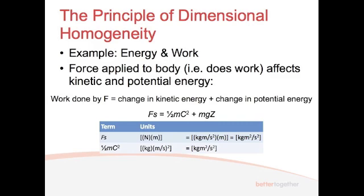For kinetic energy, we have one-half times the mass times the velocity squared. So we have kilograms times by metres per second, and those metres per second are squared. Again, we end up with the same units: kilograms metres squared per second squared. For potential energy, we have mass times acceleration (m·g) times by a distance z, measured in metres. So we have kilograms times metres per second squared, like a newton — m·g is also a force — and then we multiply that by a distance in metres. Again, we end up with the same units: kilograms metres squared per second squared.